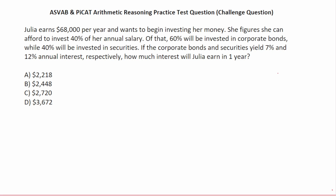First, we're going to take this one step at a time. She makes $68,000 a year and she wants to invest 40% of that. So we're going to do 68,000 times 0.4. 0.4 is the decimal equivalent of 40%, and this will tell us how much she's going to be investing.